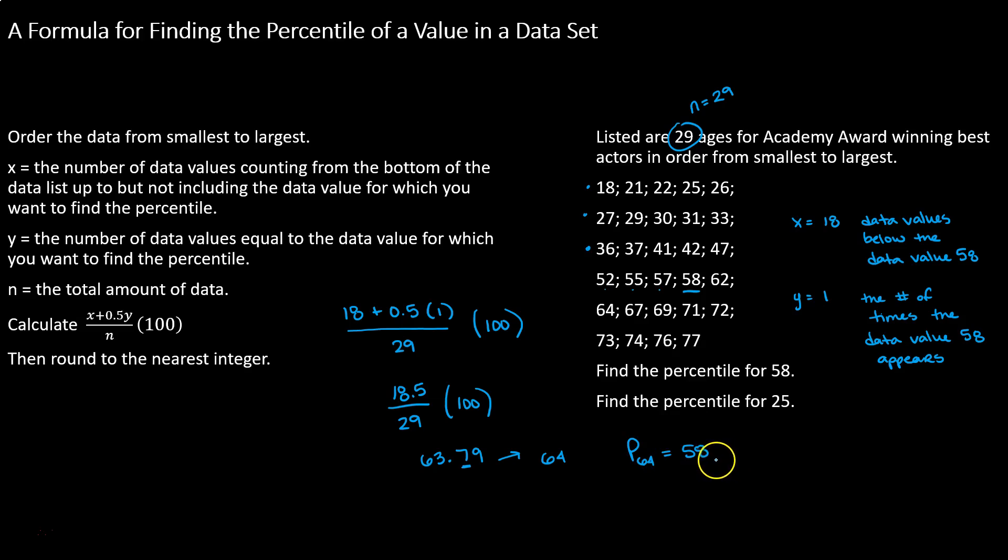Let's do another one. Let's try to find the percentile for 25. We're still looking at 29 ages so n is still 29. We need to find the data values below the data value 25 and we need to find the number of times the data value 25 appears in our data set. So looking at our list we can see 25 right here. There are only three values below it so x would be equal to 3, and 25 appears exactly once so y would be equal to 1.